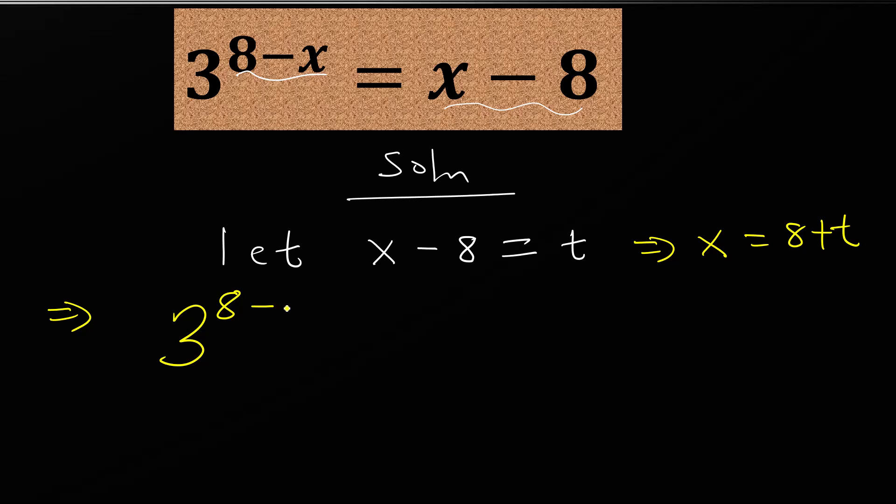In place of x I'll put 8 plus t, so 3 to the power of 8 plus t in parentheses equals t. We are introducing brackets because the negative will affect everything here.